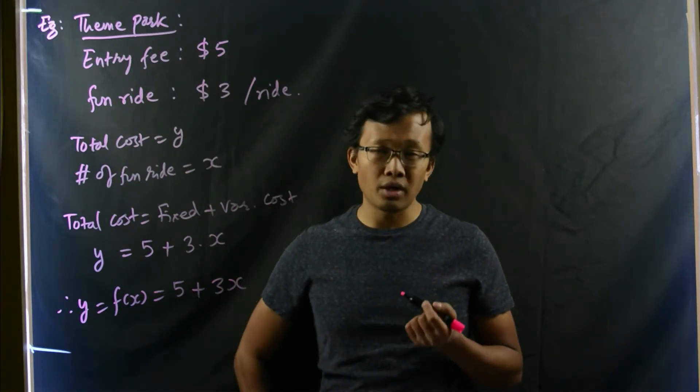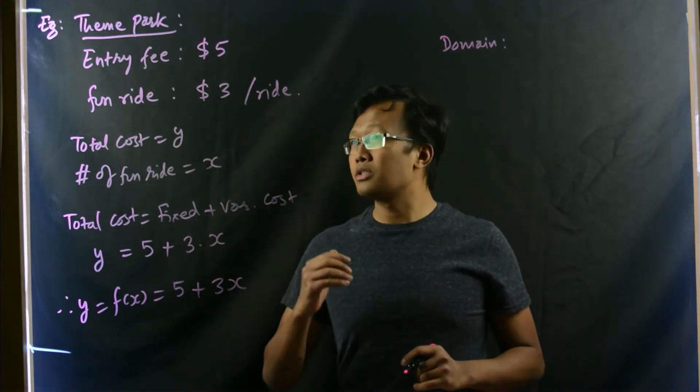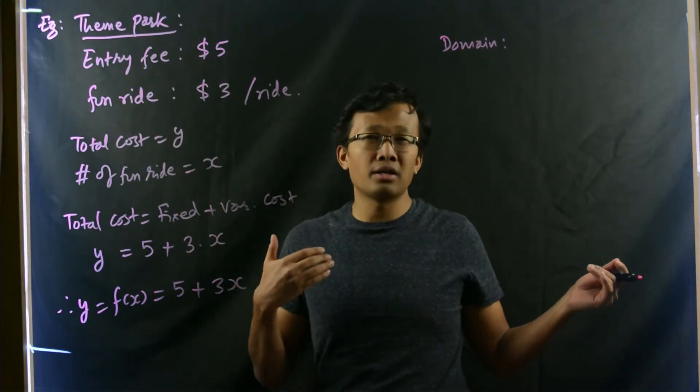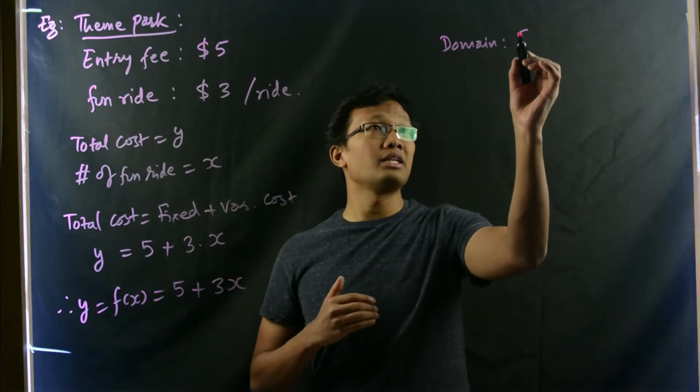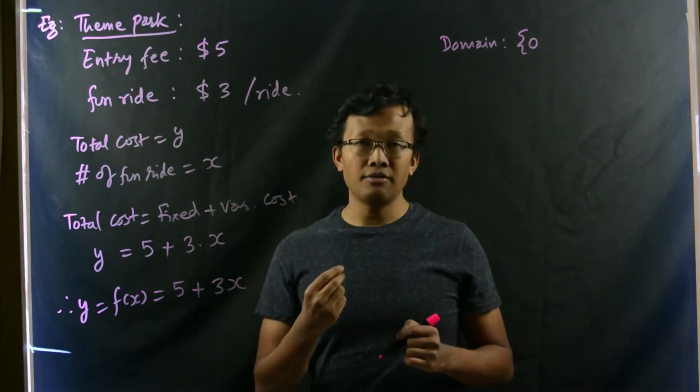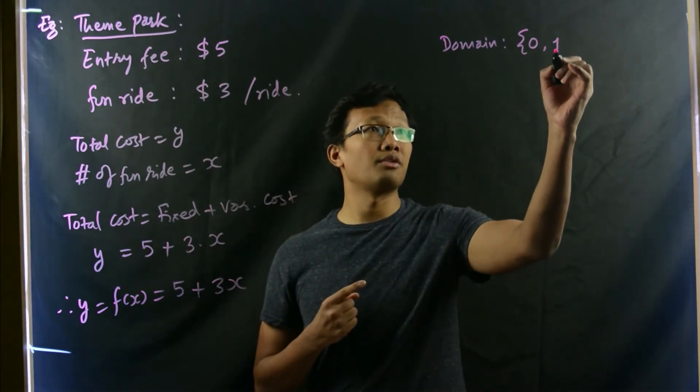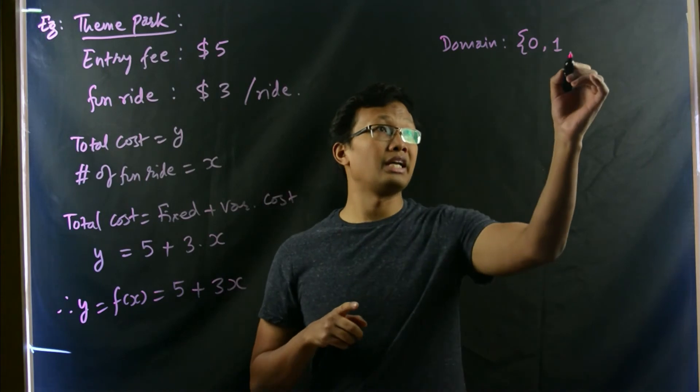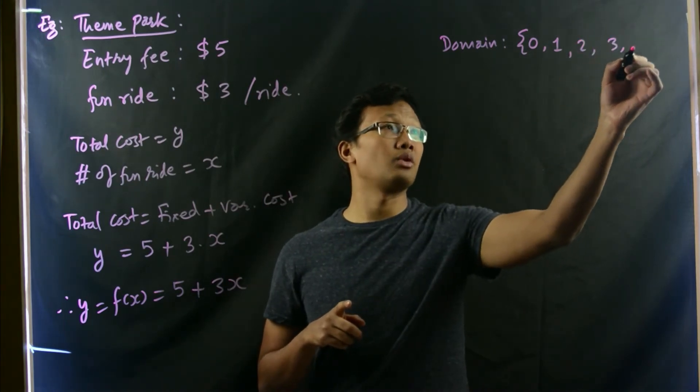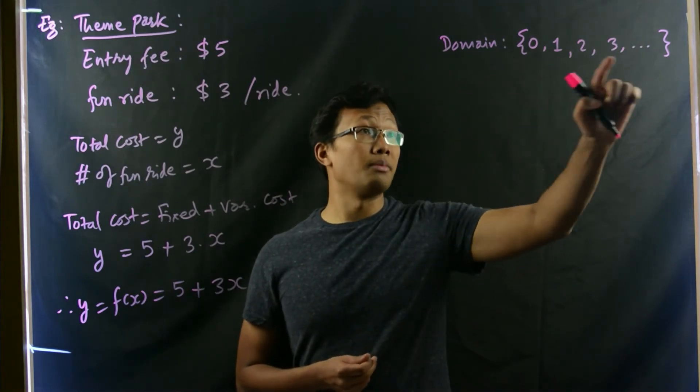Now, you can clearly see what is the domain, what is the range. Now, let's go for domain. You can just go to the theme park. You may not be interested in fun ride. Then, this would be 0 fun rides. If someone just goes for 1 fun ride, then you can go for x equals to 1 and x equals to 2 and 3 and so on. It goes in this way. This is the domain.